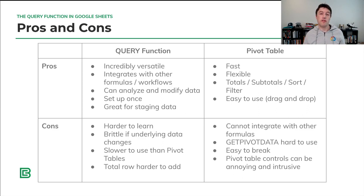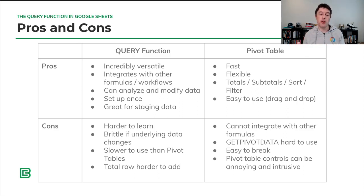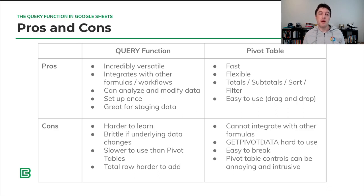What about some of the cons of the query function? Well, it can be brittle if your underlying data changes. Because the recipe is written out as a string, it's not dynamic — it doesn't move. If your columns swap order, move around, get deleted, or new columns get added, it doesn't automatically update the query string. You have to go back and change it manually, and it can lead to errors if you don't do that.